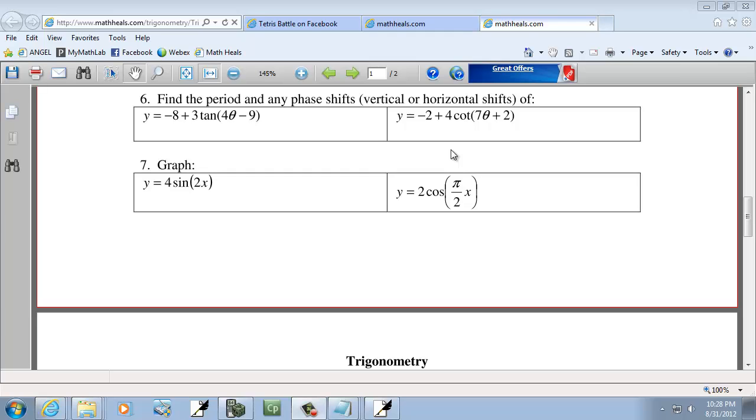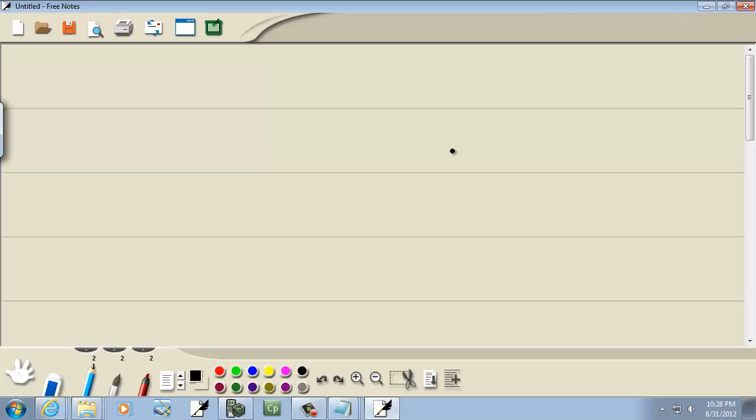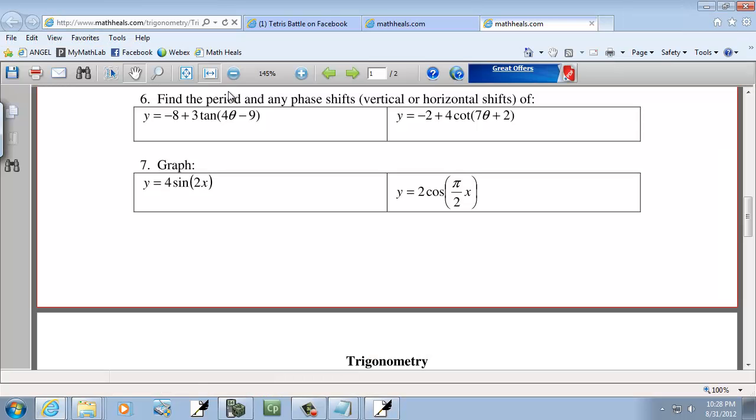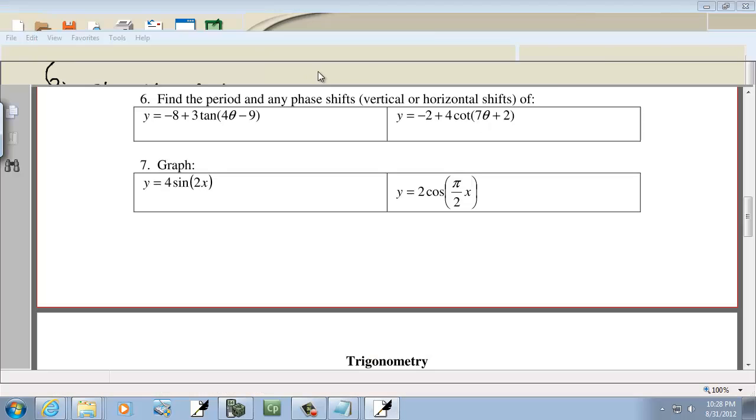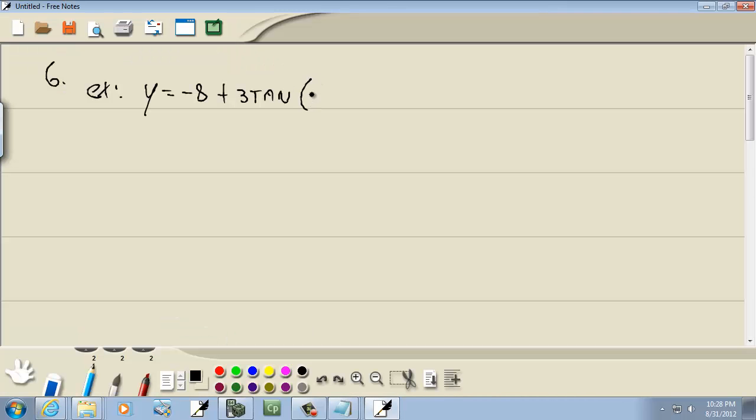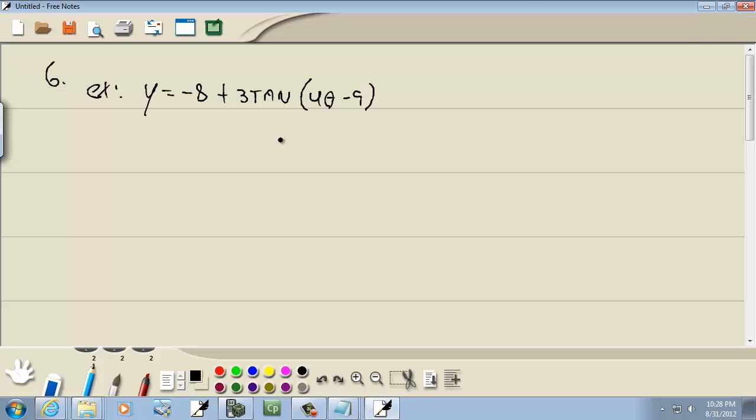Now let's take a look at our sixth type of problem. In our first example, we have y equals negative 8 plus 3 tangent of 4 theta minus 9. And this says find the period and any phase shifts, vertical and horizontal shifts of the following.